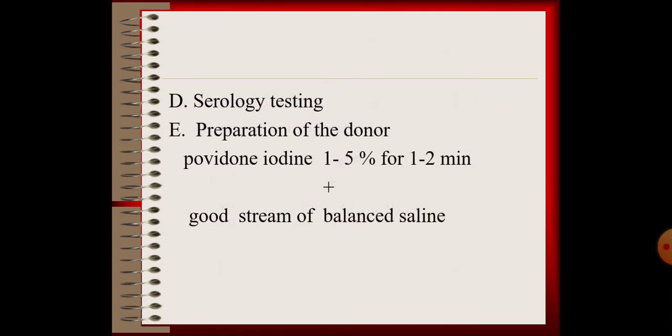Next, serology testing. Then preparation of the donor: povidone iodine 1 to 5 percent for 1 to 2 minutes, plus a good stream of balanced saline solution.